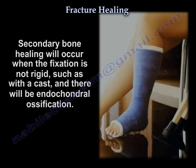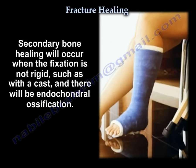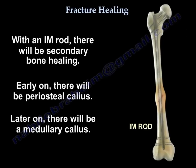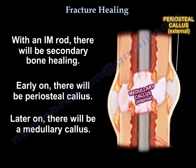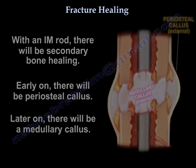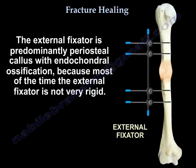Secondary bone healing will occur when the fixation is not rigid, such as a cast, and there will be endochondral ossification. With an intramedullary rod, you will have secondary bone healing — early on you will have periosteal callus, and later on you will get medullary callus. The external fixator is predominantly periosteal callus with endochondral ossification, because most of the time the external fixator is not very rigid.